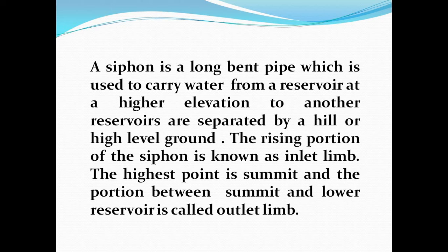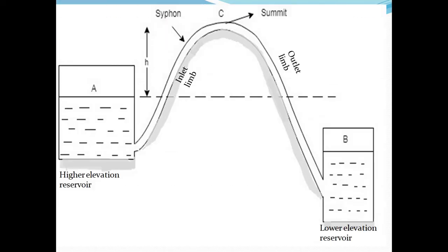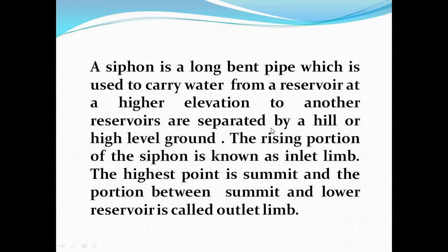A siphon is a long bend pipe which is used to carry water from a reservoir at higher elevation to another reservoir, separated by a hill or high level ground. The rising portion of the siphon is known as the inlet limb, the highest portion is the summit, and the portion between the summit and the lower reservoir is the outlet limb.